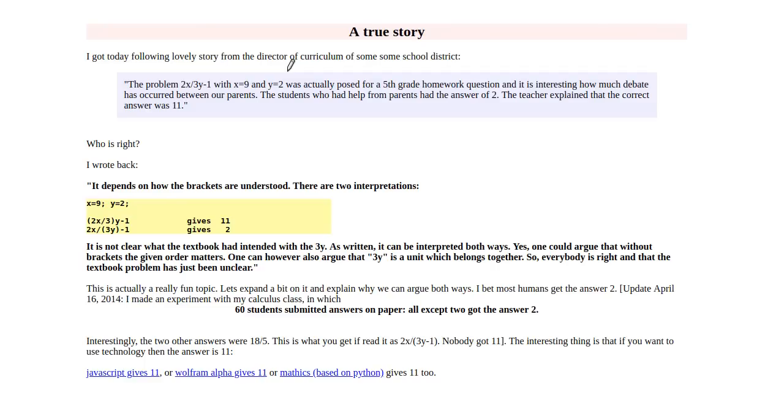Well according to PEMDAS you would say 2 times 9 divided by 3 times 2 minus 1, 2 times 9 is 18, then you divide by 3, that makes 6, you multiply by 2, that makes 12, and then you subtract 1, that's 11.